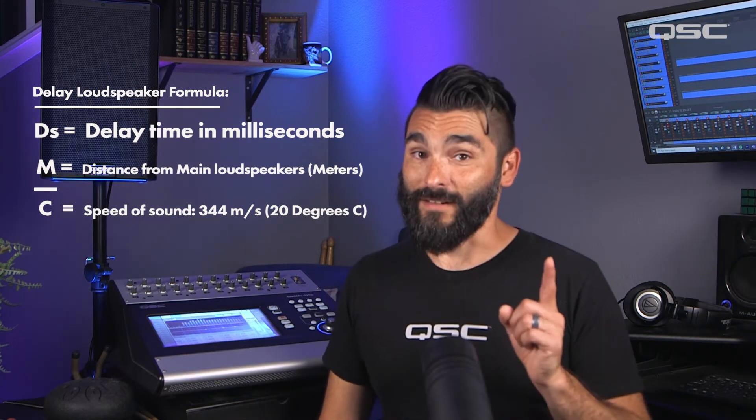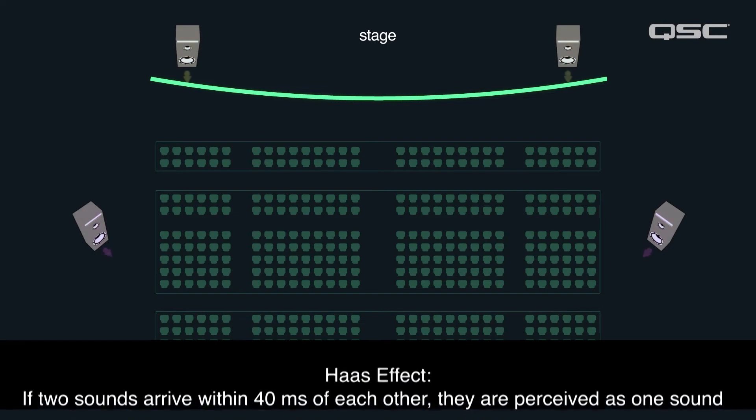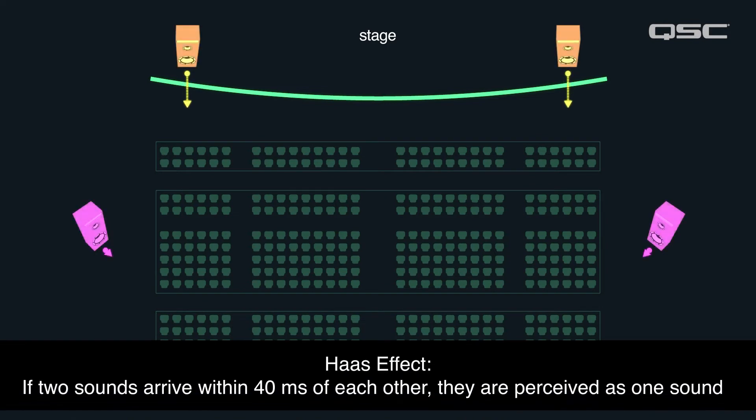But wait, there's more. After the initial delay is calculated, delay speakers are often delayed by a few extra milliseconds, taking advantage of what's known as the Haas effect, to create the illusion that all the sound is coming from the main loudspeakers.